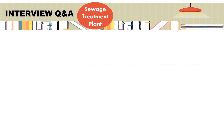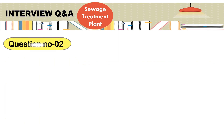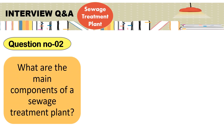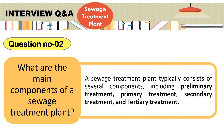The second question is: What are the main components of a sewage treatment plant? A sewage treatment plant typically consists of several components, including preliminary treatment, primary treatment, secondary treatment and tertiary treatment.